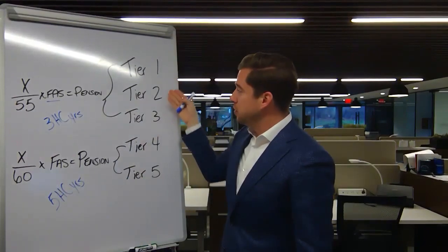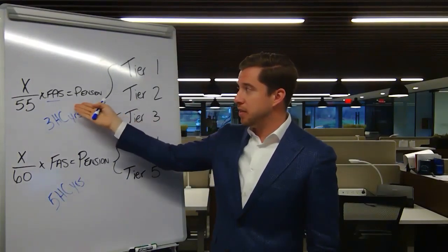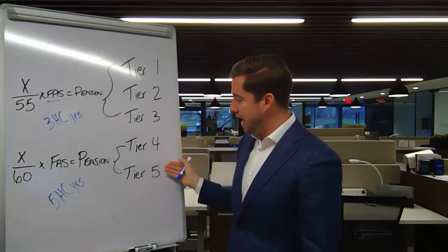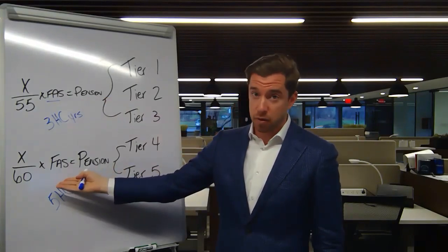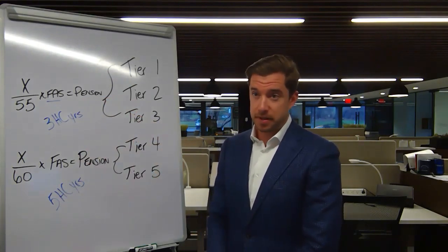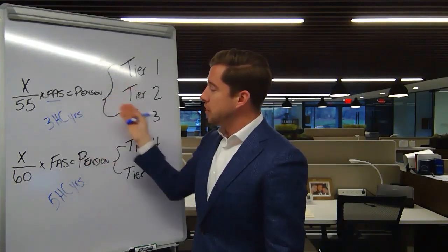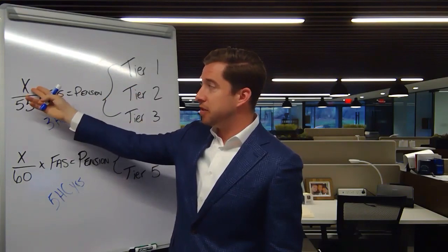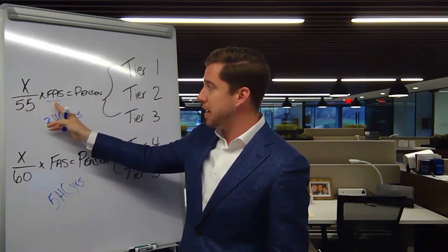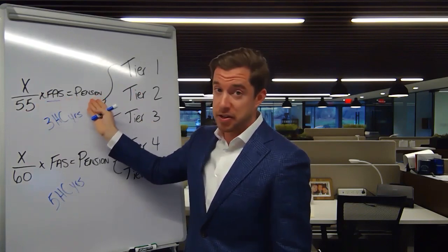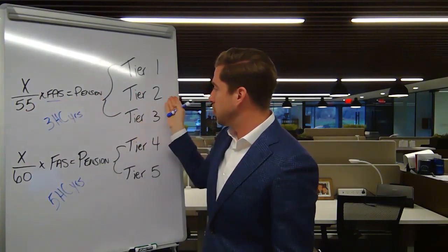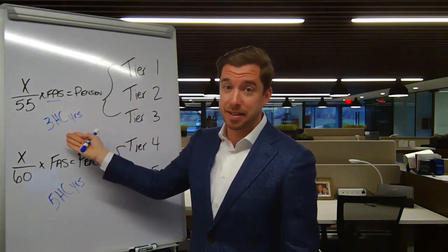As a member of tiers 1, 2, and 3, you're associated with this formula. As a member of tiers 4 and 5, you're associated with this formula. Each tier is dictated by when you started. In tiers 1, 2, and 3, your formula is number of years of service, represented by x, over 55, multiplied by your final average salary, equals your pension. Your final average salary for tiers 1, 2, and 3 is your three highest consecutive years.